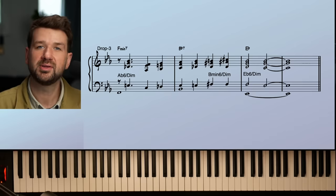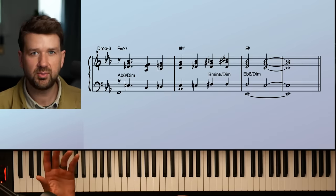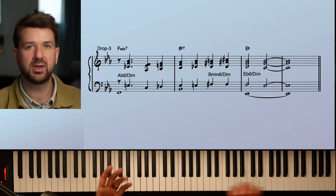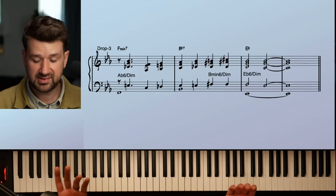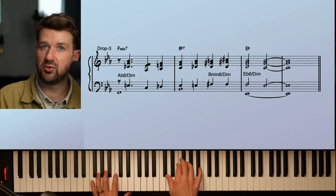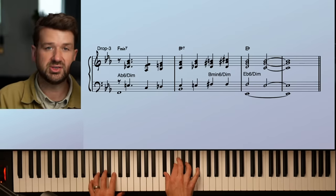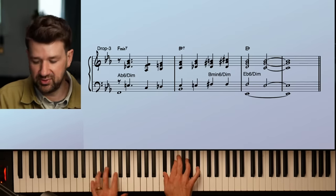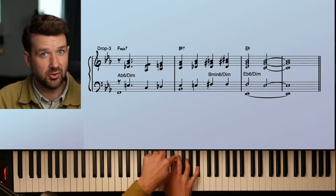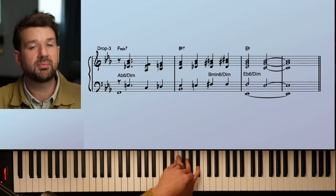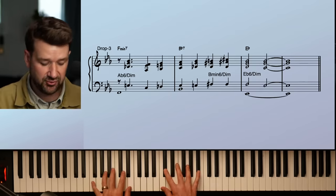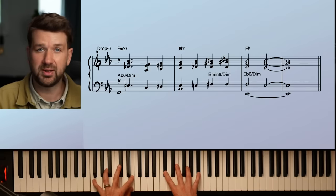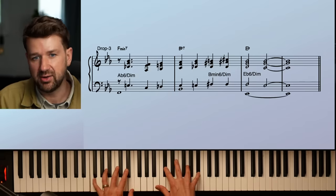These are the drop threes. I get asked about these all the time. What's the drop three? What's the difference between drop two and drop three? And how do I use it? So it's really the same concept. We have our closed voicings here. We take our D flat diminished shape that we were using. We just, instead of dropping the second note from the top, like drop two, you drop the third note from the top. In this case, an E natural, and that's drop three. And we can do the whole passage in drop three. Check it out.